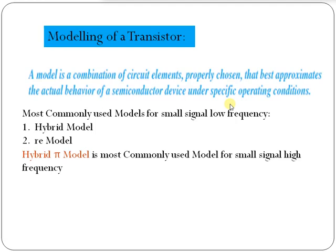At low frequencies, the junction capacitances of the transistor act as open circuits due to their high reactance, so the effect of junction capacitance is not considered. Whereas at high frequencies, the junction capacitances conduct appreciably and, due to low reactance, they provide a feedback path from the output to the input.